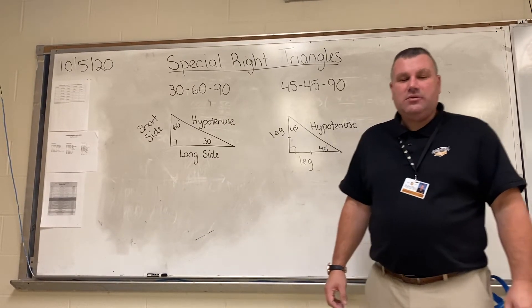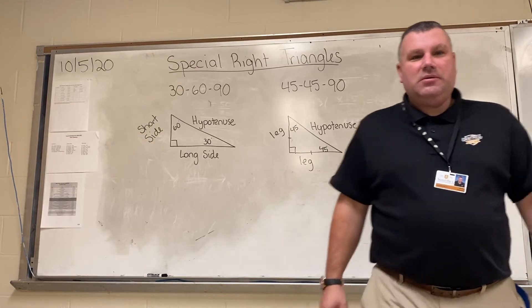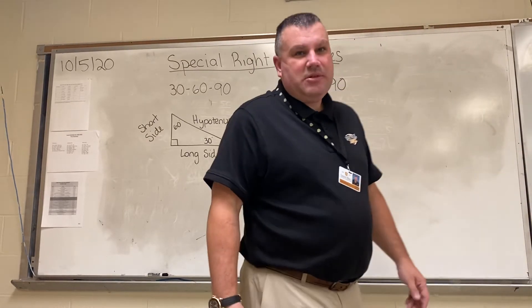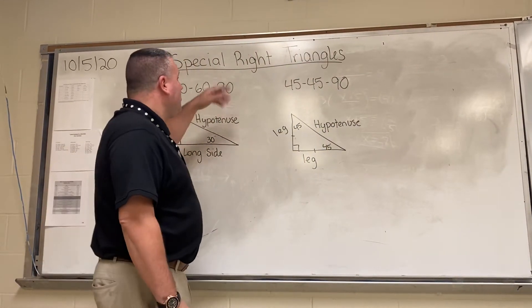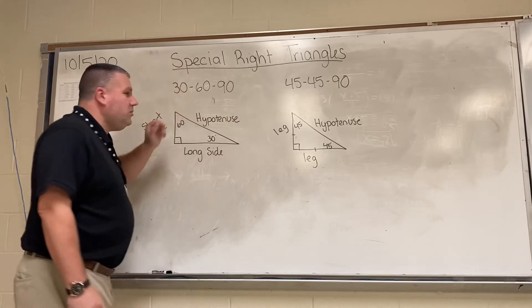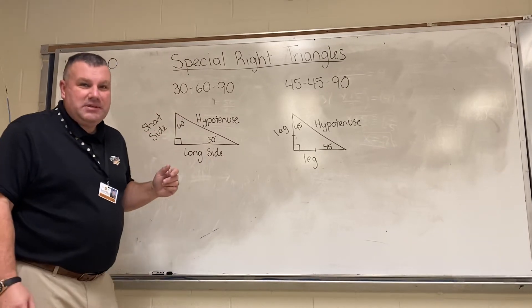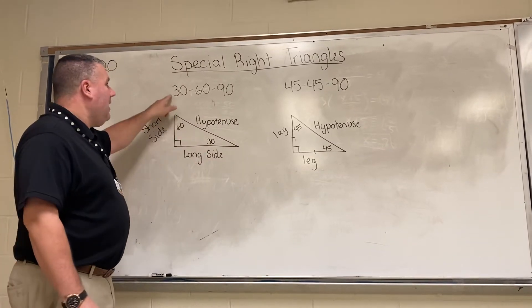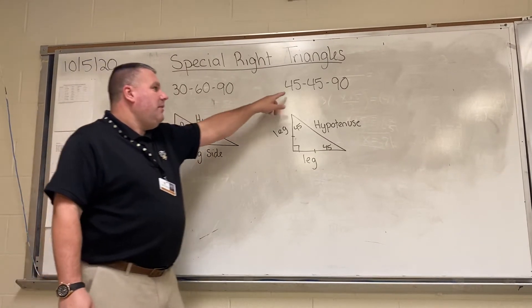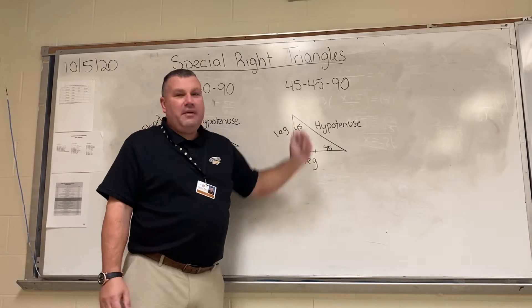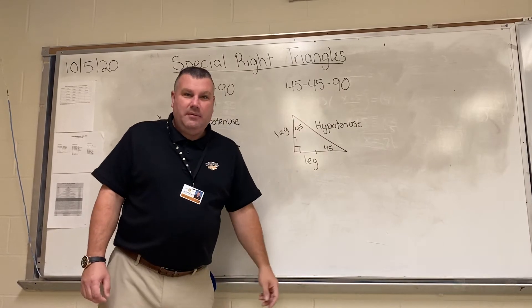We're going to introduce to you topics called Special Right Triangles. Special Right Triangles are two that we're going to be discussing: we have the 30-60-90 and the 45-45-90.